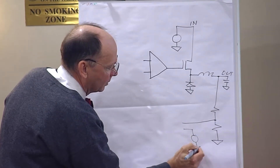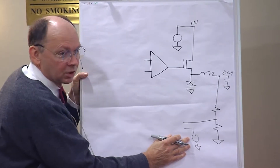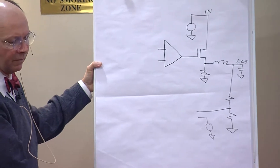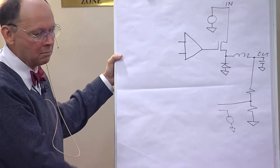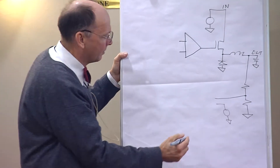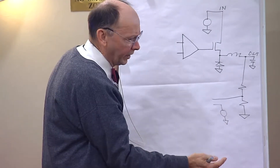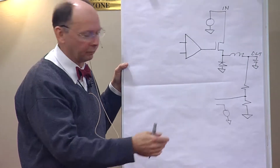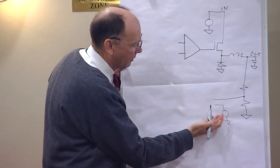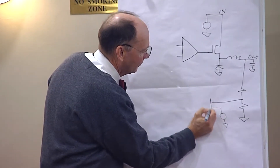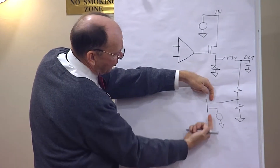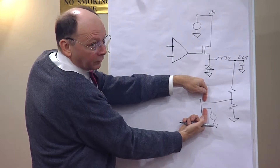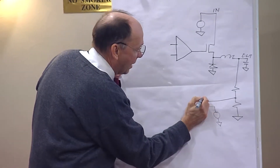The reference is typically 1.2 volts because you can generate a 1.2-volt reference on an integrated circuit with fantastic temperature stability from -55 to 125°C. Even if it's listed as 0.8V or 0.6V, it's actually 1.2V internally divided down. The difference between the divided output and the reference voltage is the error voltage, amplified by an error amplifier.